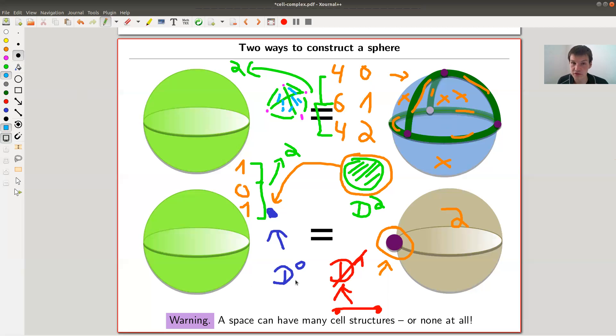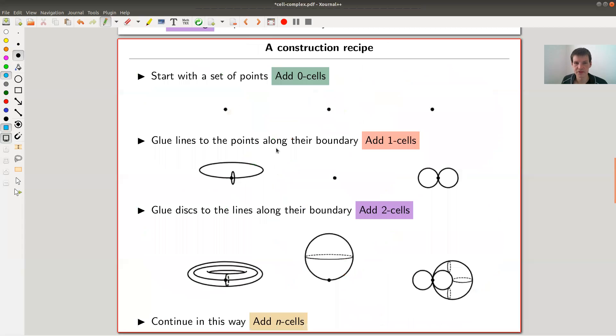The point is, I just showed you two different cell structures on the sphere itself. But the idea of how to construct them is actually the same: add a number of points, add a number of lines, add a number of disks, add a number of three disks, and so on. And you glue them together along the boundary.